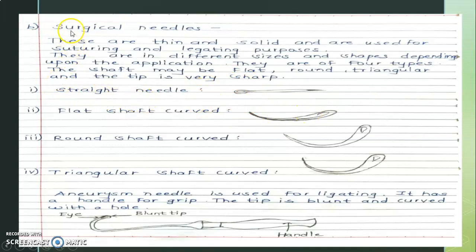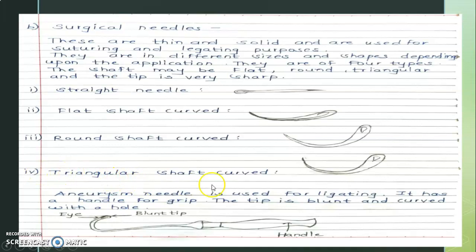These are the surgical needle subtypes. The first is the straight needle, which has a straight length. Next is the flat shaft needle — the shaft is flat and twisted. Next is the round shaft needle — the shaft is round. Next is the triangular shaft curve — the shaft is triangular and curved, forming a small U-shape. The front inner crown curve gives an end curved shape.